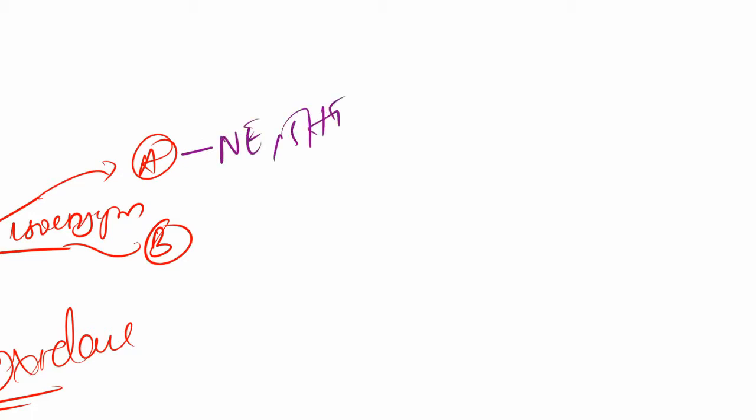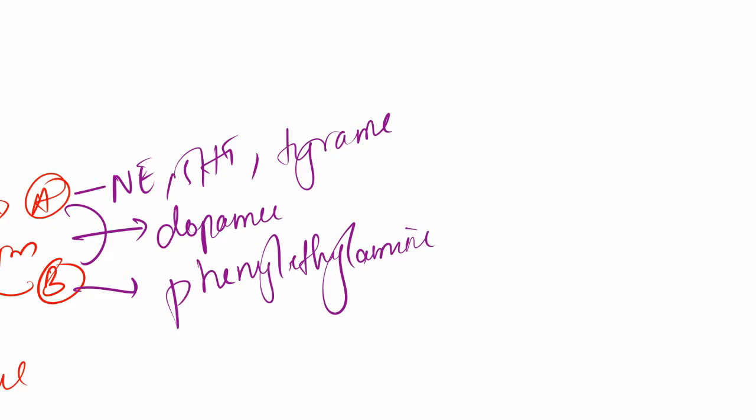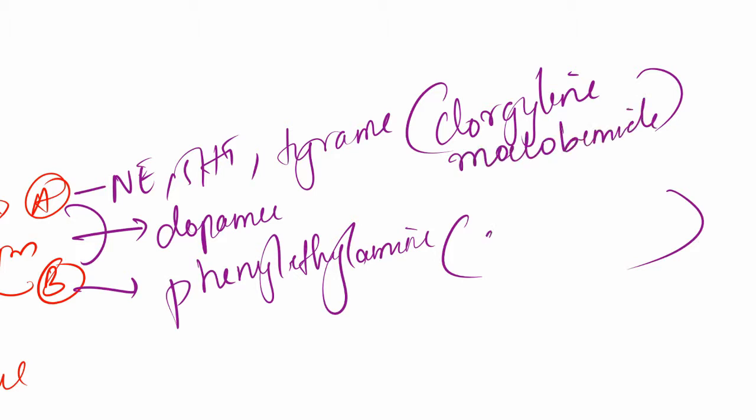Both of them are involved in dopamine synthesis, and B is related with phenylethylamine. The drugs which we used to inhibit them are Clorgiline, Moclobemide, and Selegiline. Selegiline for B, Clorgiline and Moclobemide for A - weird names, bear with me.